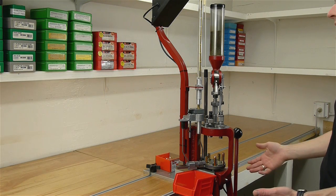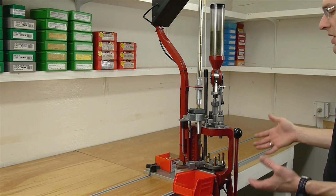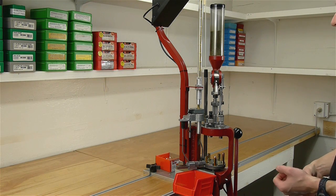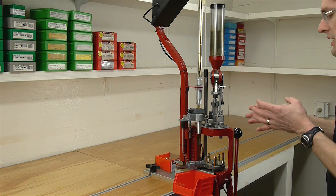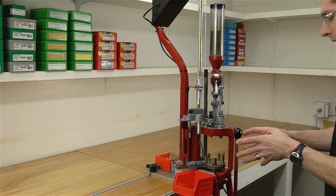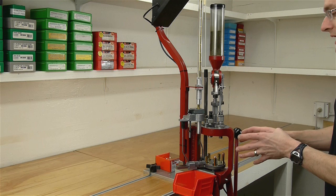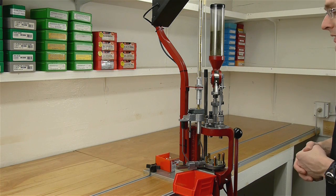So let's talk about some of the basic features of the Hornady Lock and Load AP. This is a cast aluminum framed auto-indexing five-station progressive reloading press.